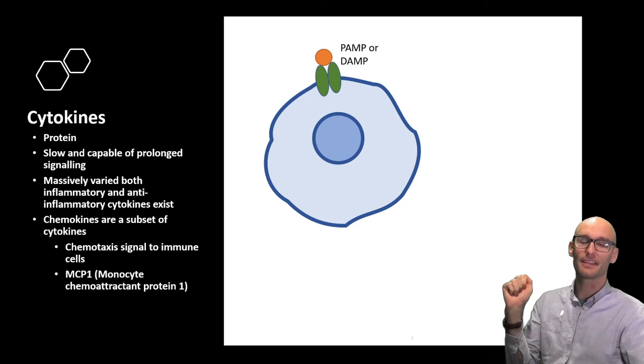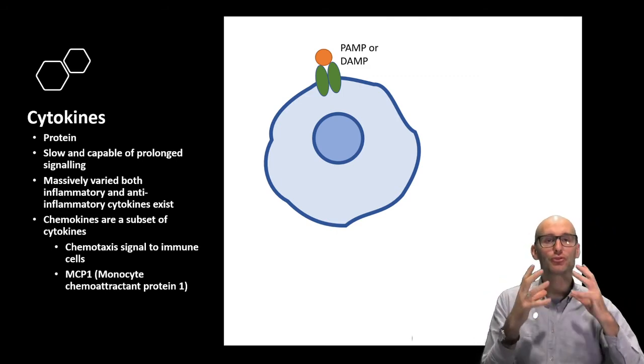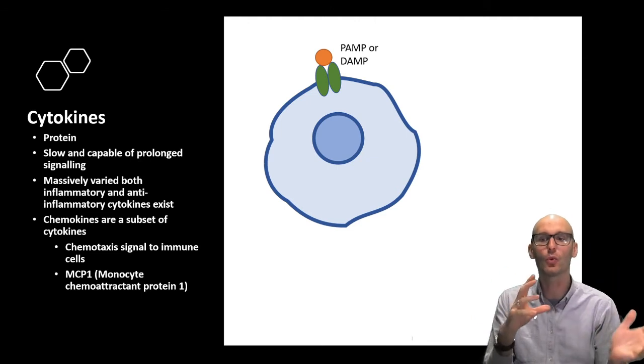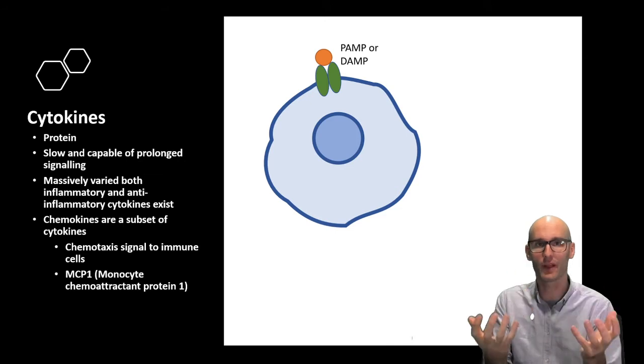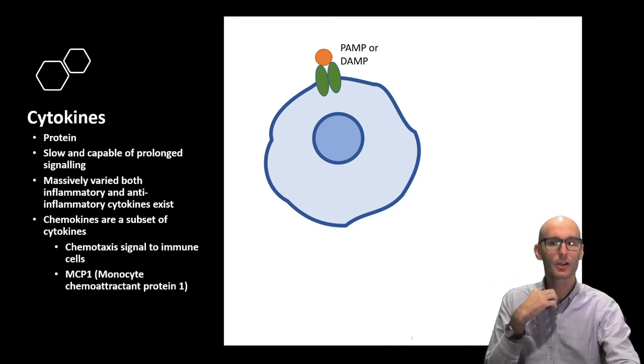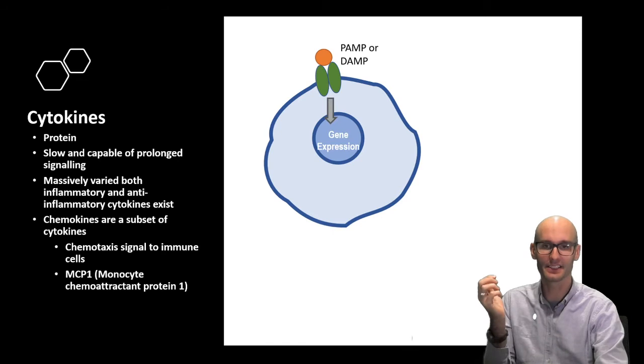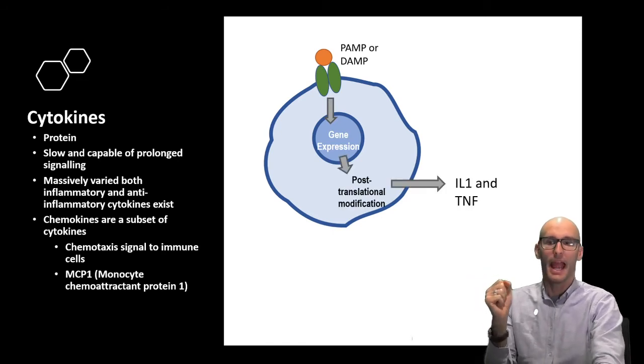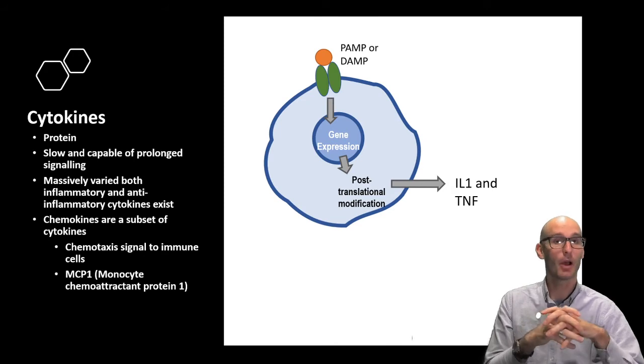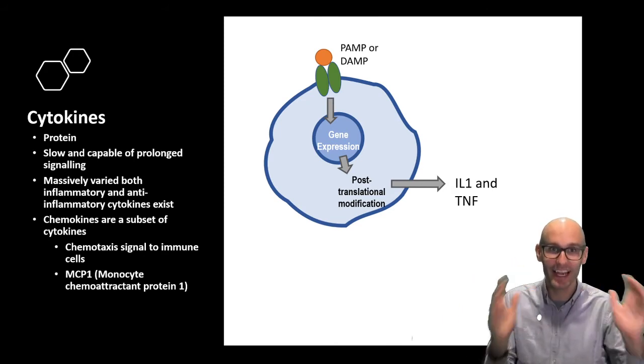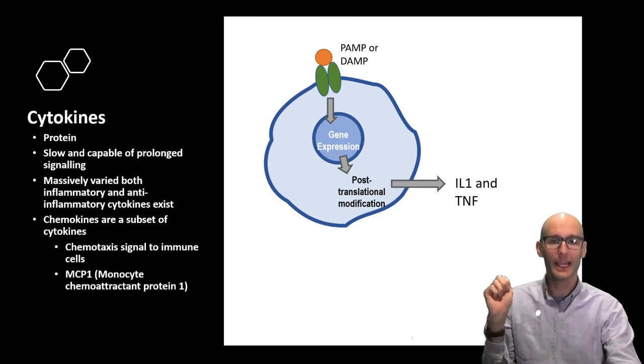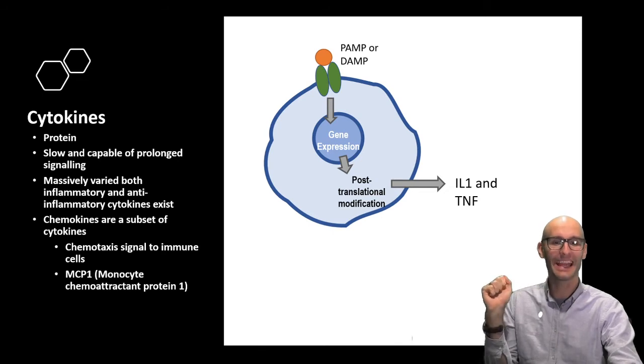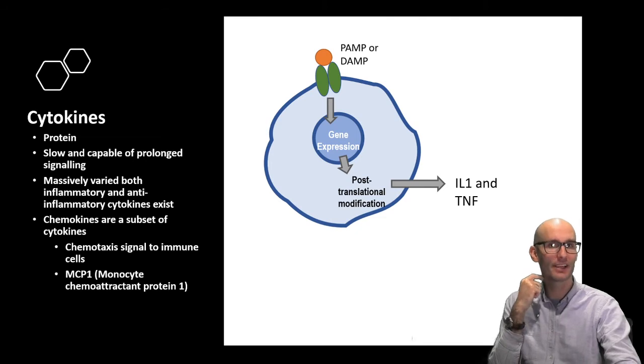Now moving on to cytokines. Cytokines are a little bit different. Cytokines are protein inflammatory signaling molecules, but they can also be anti-inflammatory signaling molecules. They are proteins that regulate the inflammatory response. They are again a little bit slow because they require changes in gene expression. There's a few different kinds of cytokines. By a few, I mean a lot. There are a lot of cytokines. I'm just going to go through a couple of examples.